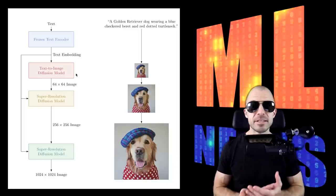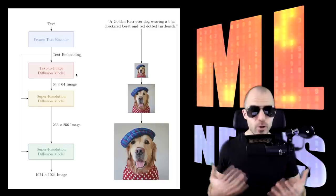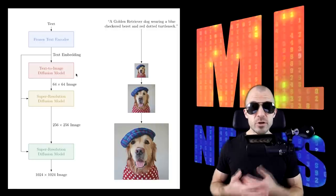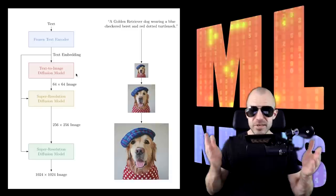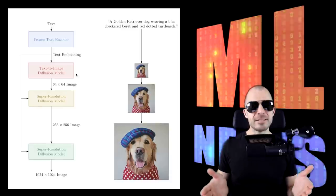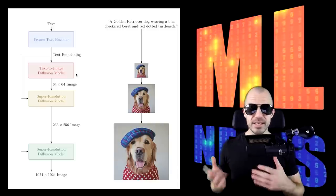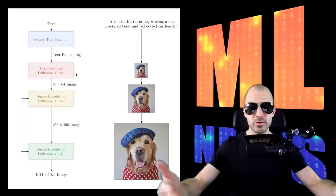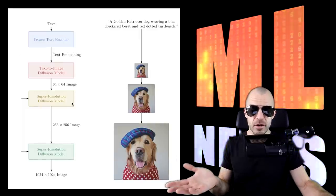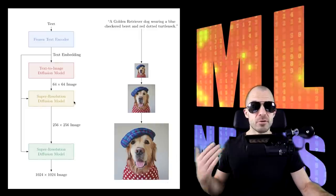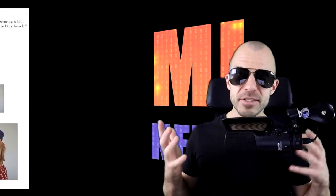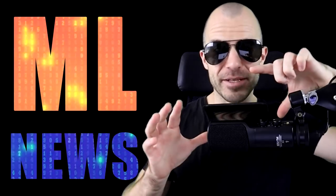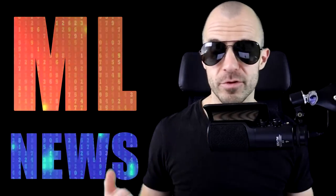The text embedding is then fed into a text-to-image diffusion model. Diffusion models have gained in popularity over the last few months, competing in quality with autoregressive models. This model simply takes the text embedding, feeds it into the diffusion model, generates a low-resolution 64×64 image, and then feeds that into super-resolution diffusion models. There are two stages of super resolution: the first going to 256×256, and the second going to 1024×1024.